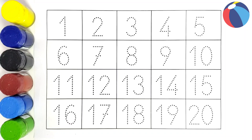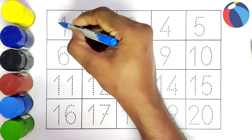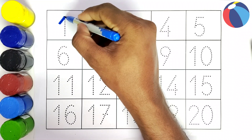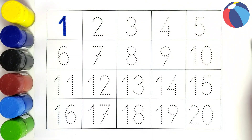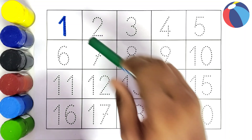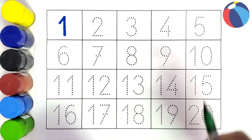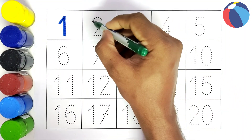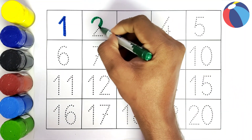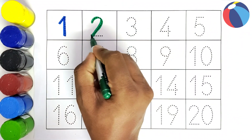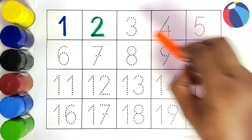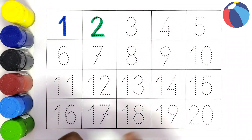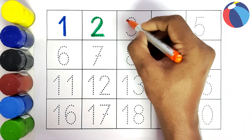So we will start coloring all these numbers. This is 1, number 1. This is 2, number 2. This is 3, number 3.